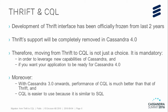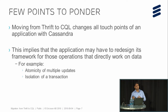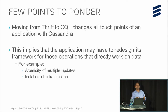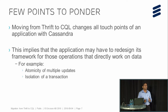With Cassandra 3.0 onwards, performance of SQL is much better than that of Thrift, so if you want to leverage that you have to move. SQL is also easier to use because it's similar to SQL, which everybody is comfortable with. When you think of this transition, all the touch points of your application are going to change. Depending on how decoupled your touch points were, you may have to rework on frameworks that provide things like atomicity and isolation.